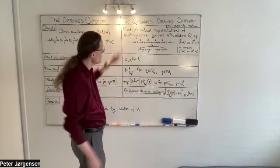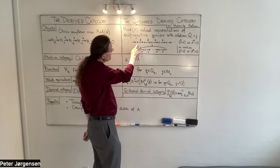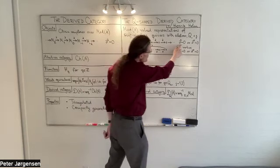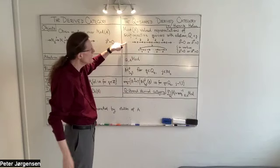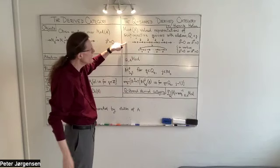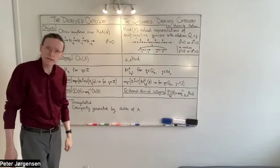And you now consider representations of such a quiver with values in mod A. So that consists of placing at each vertex an A-module and placing at each arrow a homomorphism of A-modules in such a way that the relation is satisfied. And I think you can see that if I take this quiver with that relation, then in fact, such a representation is just a chain complex.